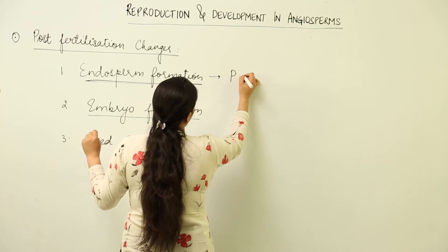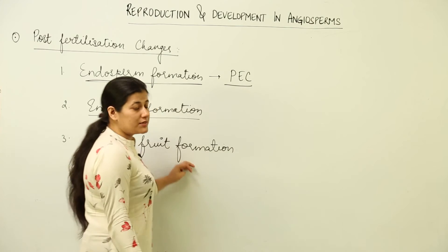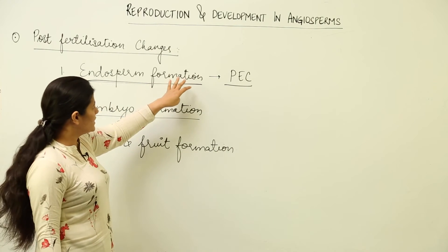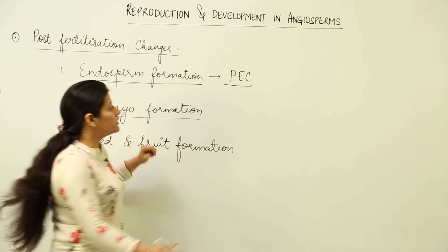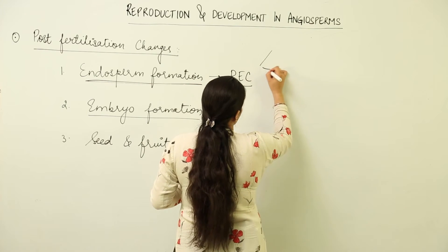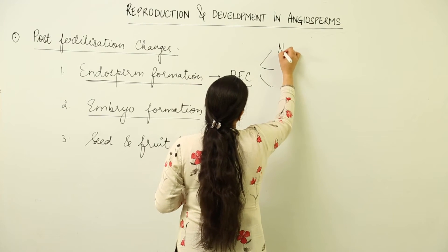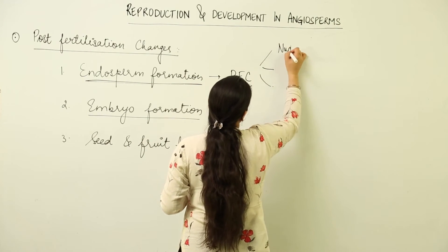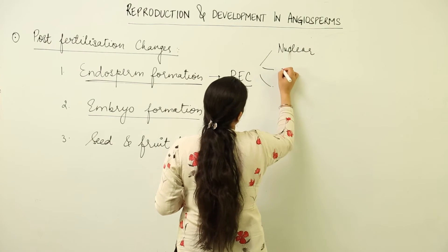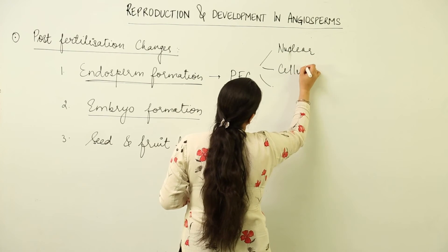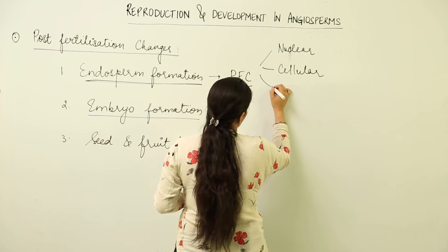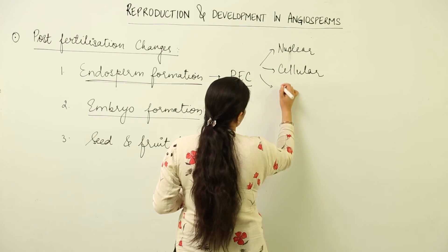Primary endosperm cell forms the endosperm. That endosperm could be of three types: nuclear endosperm, cellular endosperm - just remember the terms, we study these in a different lesson - and helobial endosperm.